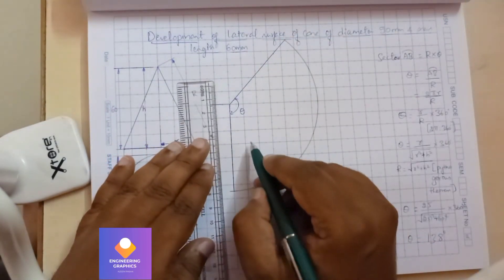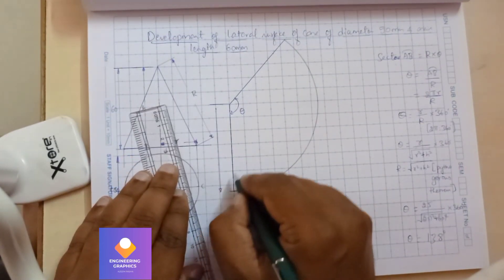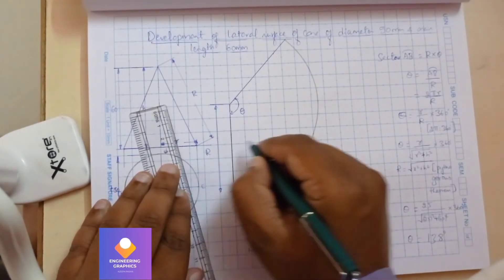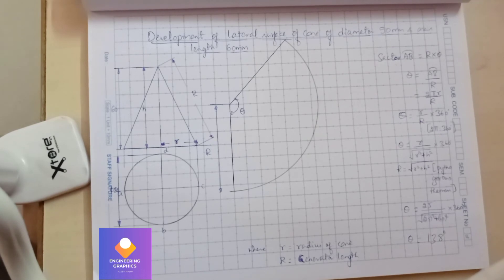This is capital R. So this is how we complete the lateral surface of the cone.